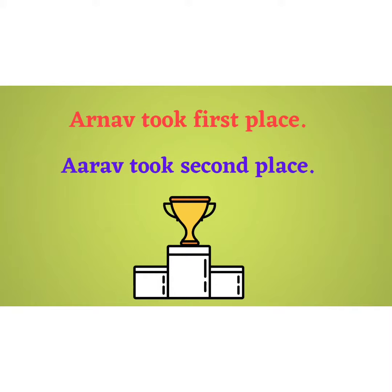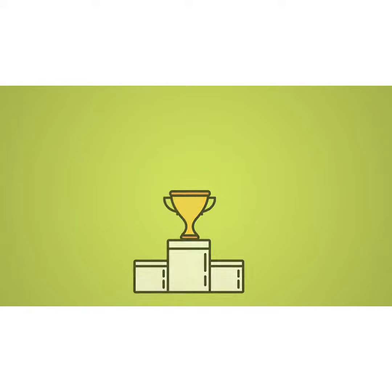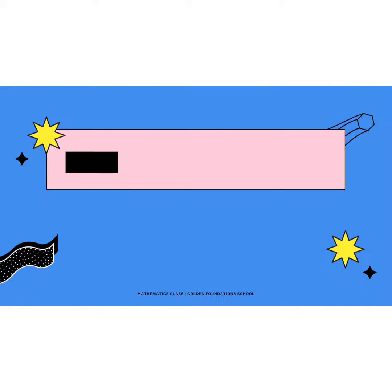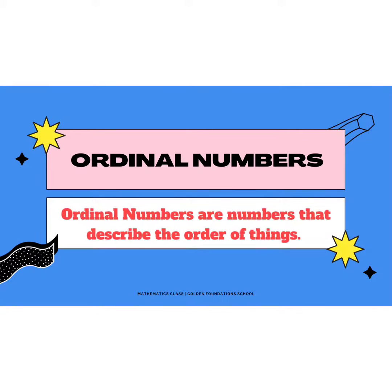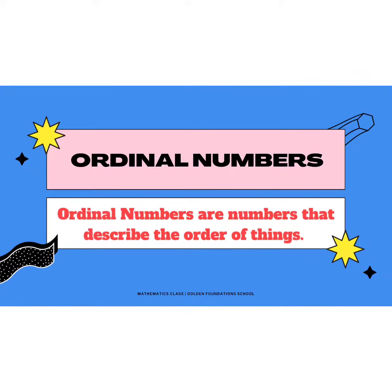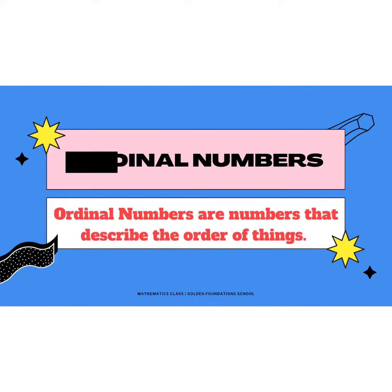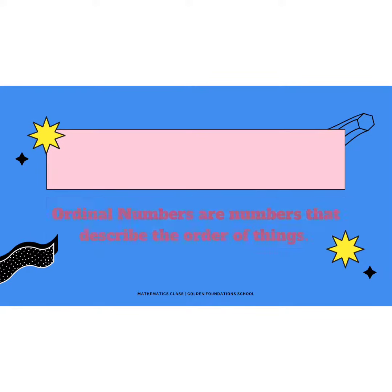Here the words first and second are called ordinal numbers. So what is an ordinal number? Ordinal numbers are numbers that describe the order of things, like first, second and third.